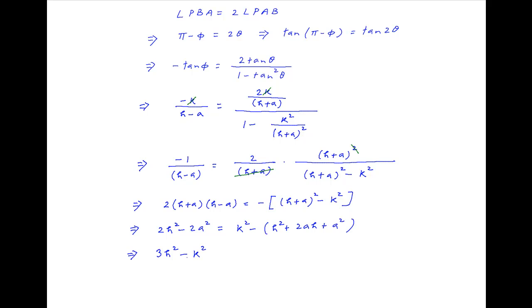This implies that 3h squared minus k squared plus 2ah minus a squared is equal to 0.